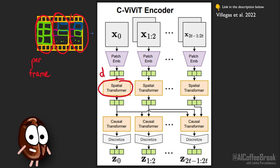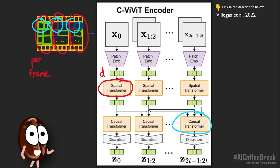So now every patch is contextualized into its own frame. The transformer layers along the temporal dimension then combine each patch at a certain position with the patches at the same position that come from the previous frames.